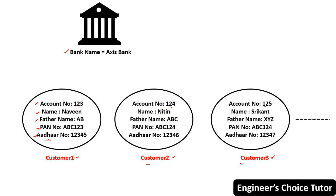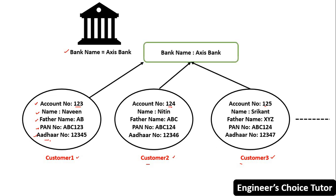Now, the bank name field has a common value — that is Axis Bank — because all the customers belong to Axis Bank in this example. As it is a common value which is shareable to every customer object, the bank name field should be declared as a static variable.